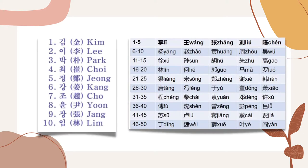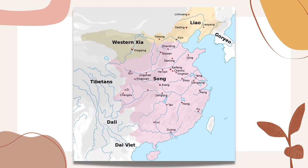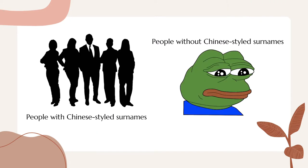Korean surnames resemble Chinese surnames because throughout the Silla period and the Goryeo period, important people such as government officials and royalty began using Chinese-styled surnames. China during this time was a big cultural influence to their neighboring countries, with Korea not being an exception. Having a Chinese-styled surname was a statement of one's importance, especially during a period where commoners did not have surnames at all. This doesn't necessarily mean that Koreans who had Chinese-styled surnames descended from Chinese ancestors, but it does mean that the usage of similar single-character surnames became popular during these periods.